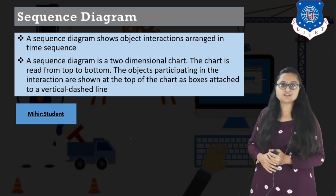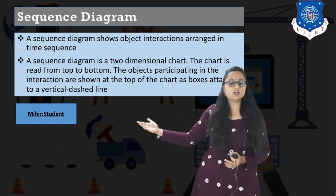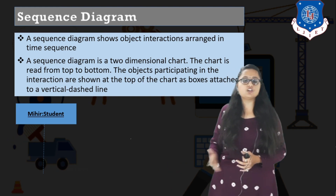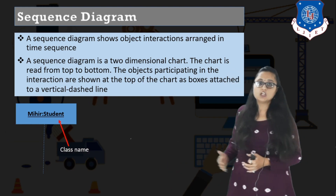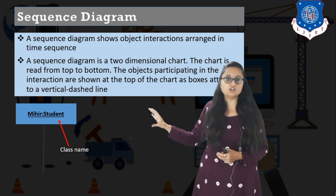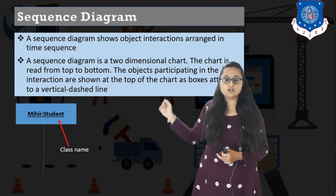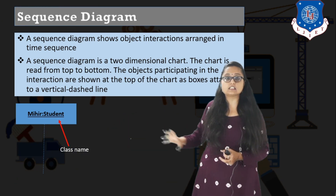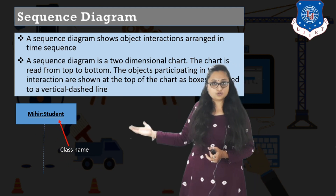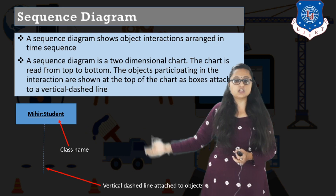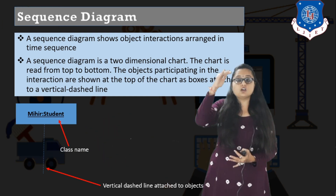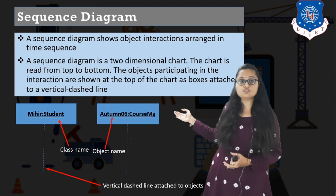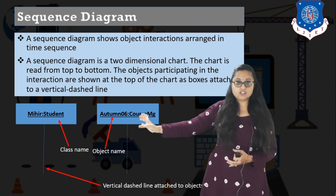Let us study the different symbols of sequence diagram. A rectangle indicates the object, and there is a dotted vertical line associated with it. In this rectangle you have written two things separated by a colon — the name written after the colon indicates a class name. So you have to write the class name as well as the object name. This vertical dashed line attached to the object indicates the overall lifetime of the object.